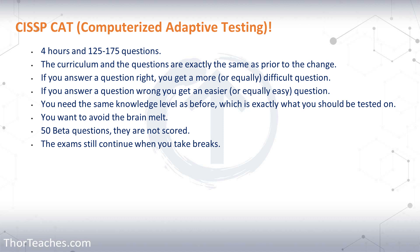One thing that is different from the CAT platform compared to the previous test is you can no longer review answers, which sort of makes sense. The way the CAT platform works is when you answer a question right, you get a harder question. But if you go back to three questions prior and change the answer, that's just going to mess up the engine, because everything you've done since that question has been based on the right or wrong answers you had. So no marking for review and no option to go back and change answers.